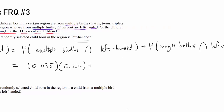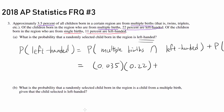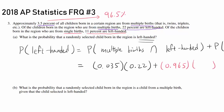For the next one, the probability that you are from single births: since 3.5% are from multiple births, there has to be 96.5% from single births (100 minus 3.5 is 96.5). So the probability is 0.965 times 0.11, since there's an 11% chance of being left-handed if from single births. Adding them up, you get approximately 0.1139.